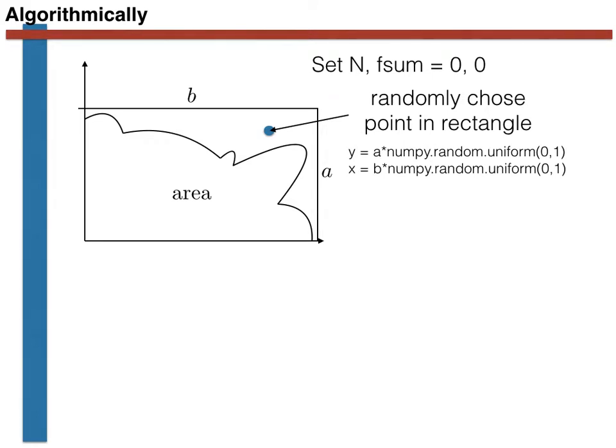Once this random point is generated, the code then checks whether or not it is underneath the curve that you would like to integrate. This particular point we have chosen here is not underneath the curve, and thus the variable z is set equal to zero when the in-shape function is called. If the point is under the curve, then z is set equal to one.